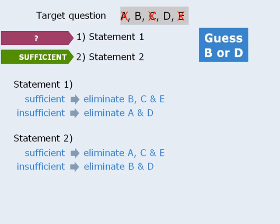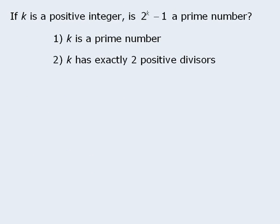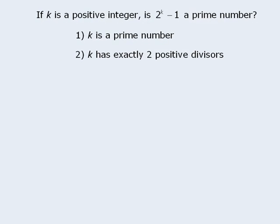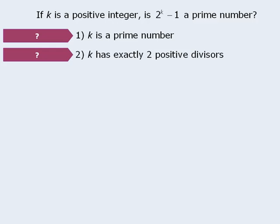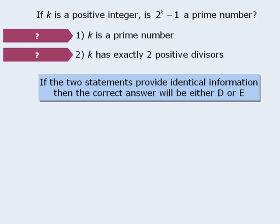Now there is one more tip you should know about. We'll illustrate this tip using the following example. In this question, we want to determine whether 2 to the power of k minus 1 is a prime number. This is a very difficult question, and probably beyond the scope of the GMAT. Let's say that we are unable to determine whether or not statement 1 is sufficient, and also unable to determine whether or not statement 2 is sufficient. However, notice that statement 1 and statement 2 provide the same information. Statement 1 tells us that k is a prime number, and statement 2 tells us that k has exactly 2 positive divisors. If a number has exactly 2 positive divisors, then that number must be prime. We have a nice rule for this situation: if 2 statements provide the same information, then the correct answer must be either D or E.